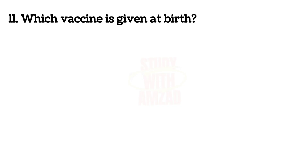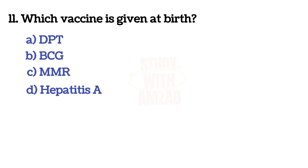Next question: Which vaccine is given at birth? The answer is B — BCG vaccine.